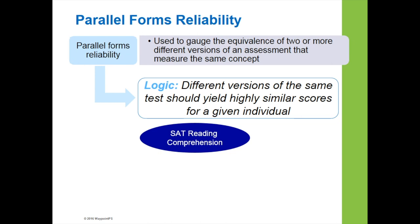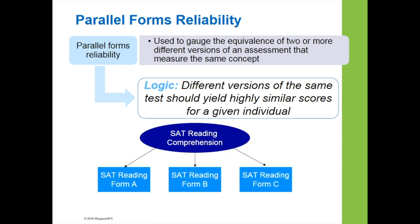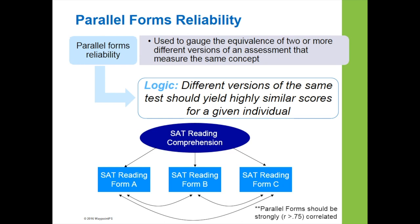Take SAT reading comprehension as an example. Educational Testing Service will have multiple versions of the same test — Form A, B, and C. If Joe were to take these three assessments all in one day, he should, assuming the test is reliable, obtain scores that are very similar. The correlation of scores across these forms should be very high — in fact, above 0.75 or so, if these forms are measuring the same idea.